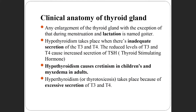The enlargement of the thyroid gland is known as goiter. Normally, the thyroid gland enlarges during menstruation and lactation (pregnancy), after which it returns to its normal size. Any abnormal enlargement beyond normal is called goiter.